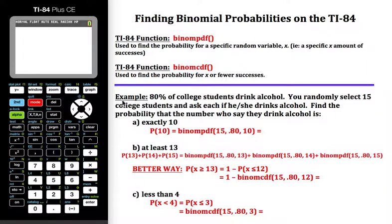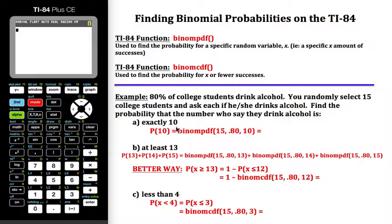In this example, 80% of college students drink alcohol. You randomly select 15 college students and ask each if he or she drinks alcohol. Find the probability that the number who say they drink alcohol is, for part A, exactly 10. So since this is a specific amount, I'm going to use the binomPDF function.